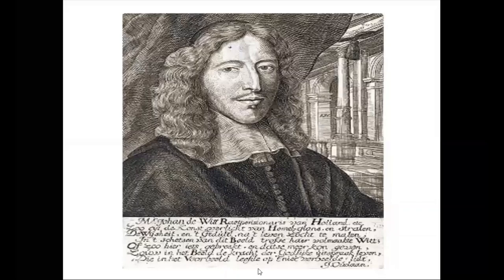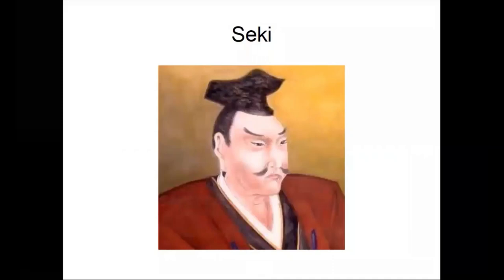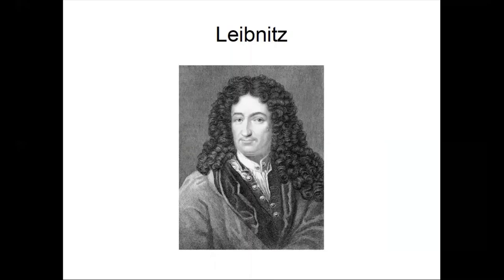In 1659, Dutch mathematician Jan de Witt represented transformations using arrays in his work Elements of Curves. Later, Japanese mathematician Seki is credited as the first person to study matrices and determinants — it was in 1683. And at the same year, Gottfried Leibniz started to study the same thing. Leibniz used the word 'resultant' for certain combinatorial sums of terms of a determinant, and proved various results including Cramer's rule and Laplace expansion. He also studied coefficient systems of quadratic forms, which led naturally towards matrix theory.